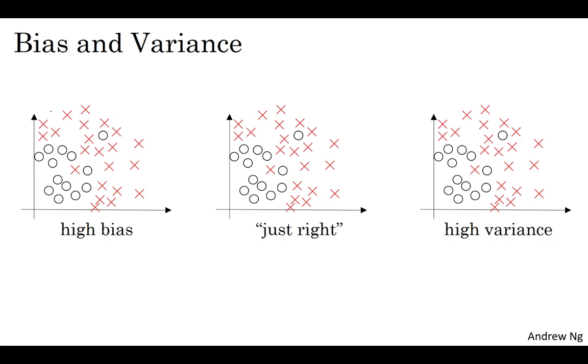Let's see if a dataset that looks like this. If you fit a straight line to the data, maybe you get a logistic regression fit to that. This is not a very good fit to the data, so this is a case of high bias or we say that this is underfitting the data. On the opposite end, if you fit an incredibly complex classifier, maybe a deep neural network with a lot of hidden units, maybe you can fit the data perfectly, but that doesn't look like a great fit either. So this is a classifier with high variance and this is overfitting the data. And there might be some classifier in between with a medium level of complexity that looks like a much more reasonable fit to the data. So in a 2D example like this with just two features, x1 and x2, you can plot the data and visualize bias and variance. In high dimensional problems, you can't plot the data and visualize the decision boundary. Instead, there are a couple of different metrics that we'll look at to try to understand bias and variance.